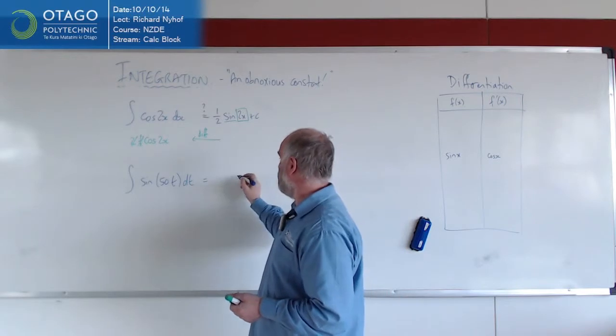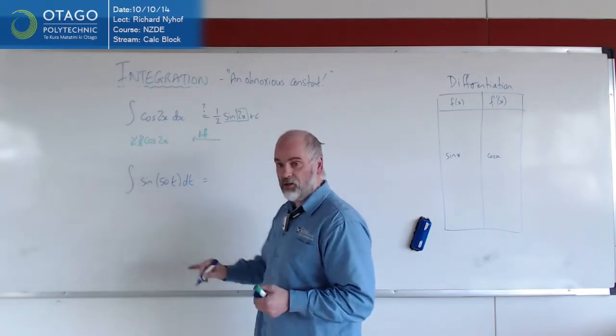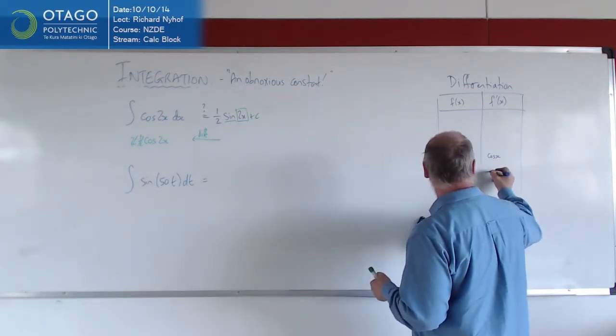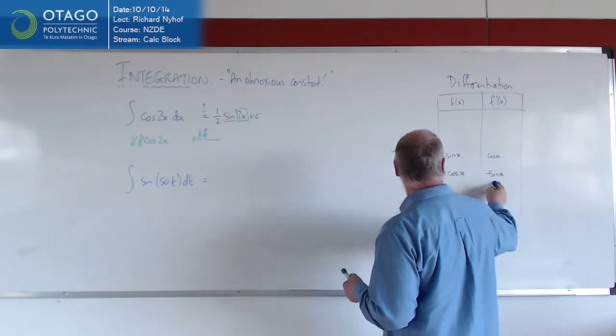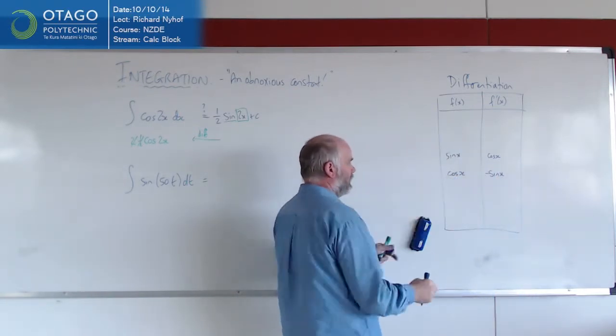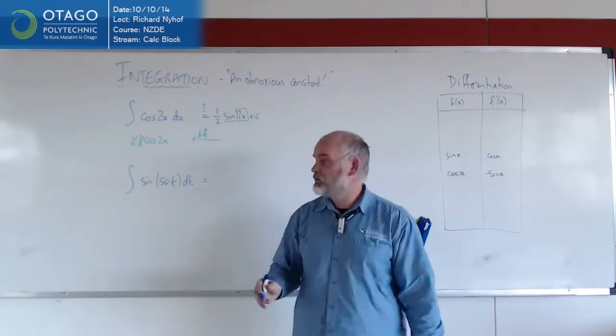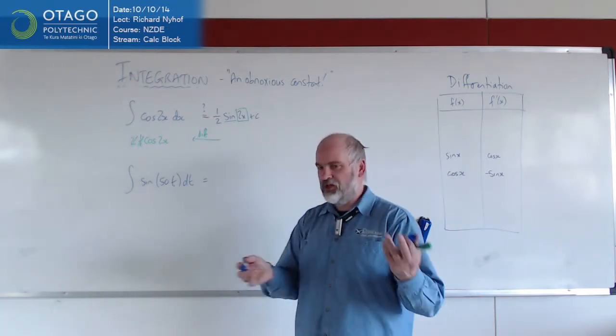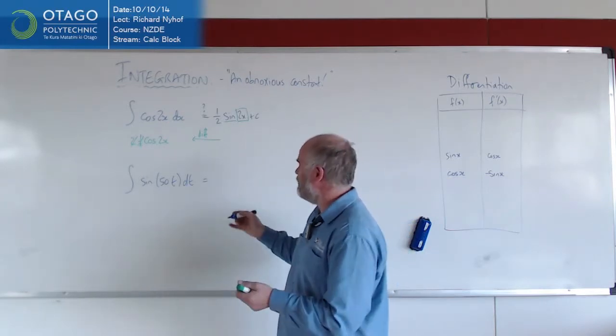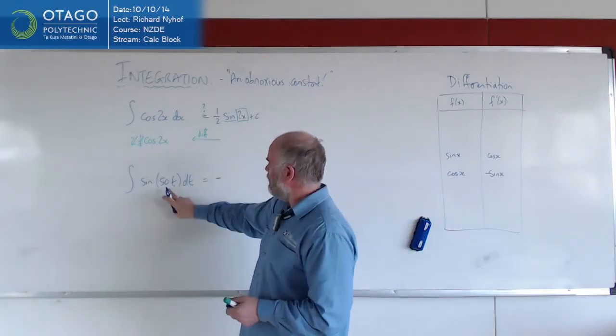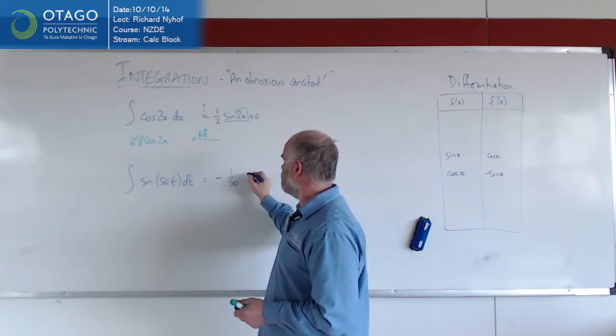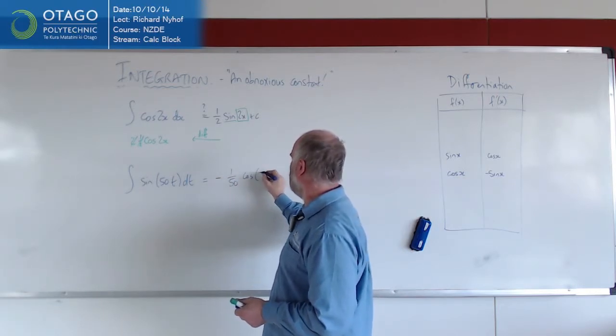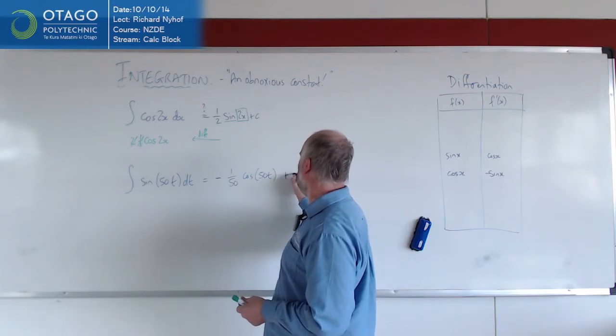So all it's going to be is when we integrate sine, what do we get? Well, if we look on this table, we have this one. So when we go sine back to cosine, you've got to change the sign. So we need sine, plus minus sine, as opposed to sine, cosine sine, but sine. So we end up with negative, and to deal with this 50, we need 1/50th of cosine of 50t.